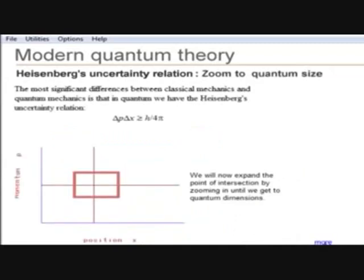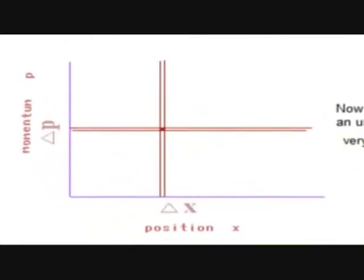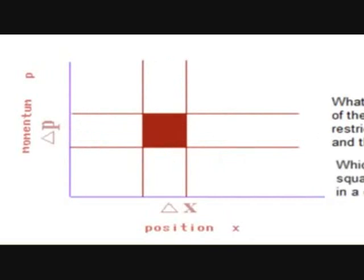A quantum particle is quite different. In order to see a quantum particle, we have to zoom down to quantum dimensions. We see that a classical point is no longer a point at quantum dimensions, but has finite size.